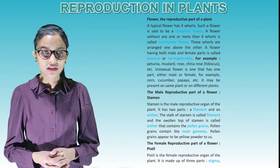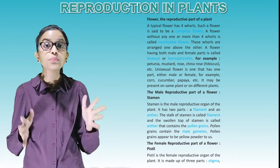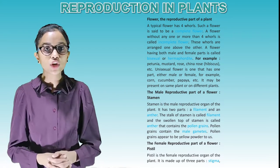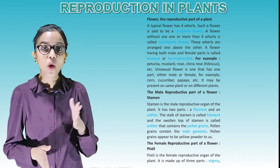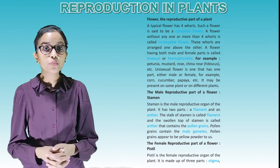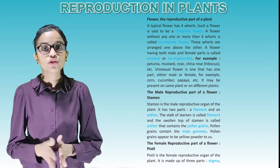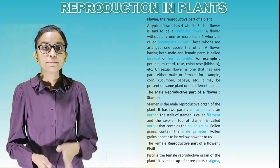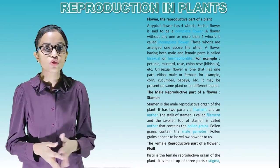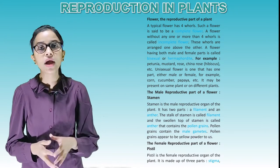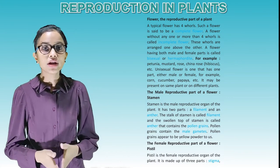Flower: The reproductive part of a plant. A typical flower has four whorls. A flower with all four whorls is called a complete flower, while a flower without one or more whorls is called an incomplete flower. These whorls are arranged one above the other. A flower having both male and female parts is called bisexual or hermaphrodite — for example, petunia, mustard, rose and hibiscus. A unisexual flower has only one part, either male or female — for example, corn, cucumber and papaya. It may be present on the same plant or on different plants.